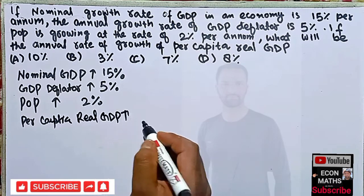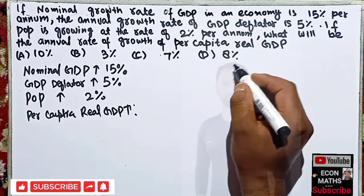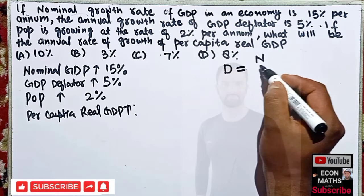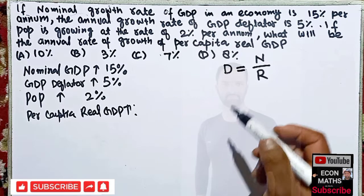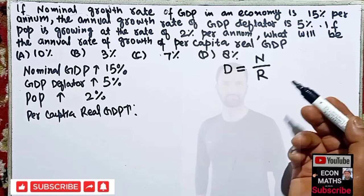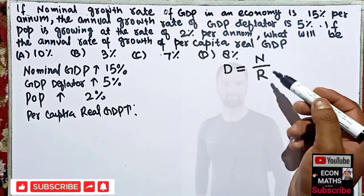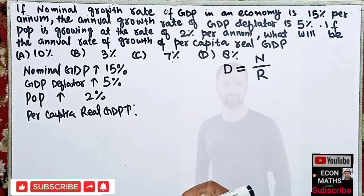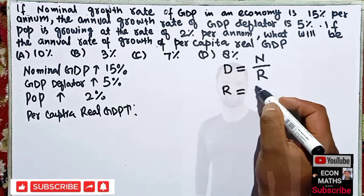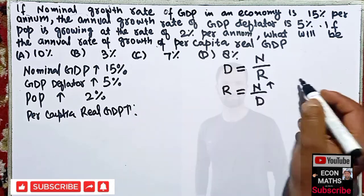The formula for the deflator is: deflator equals nominal GDP divided by real GDP. The deflator is also called the implicit price deflator — it actually measures the rate of inflation and is the ratio of nominal GDP to real GDP. Rearranging, real GDP equals nominal GDP divided by the deflator.